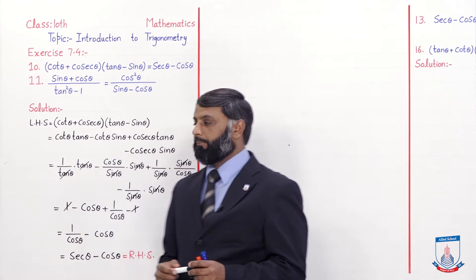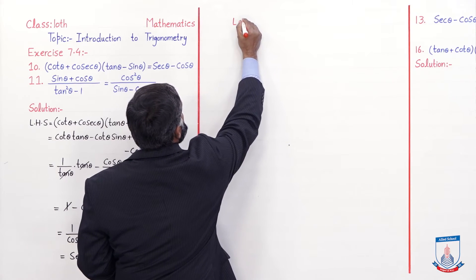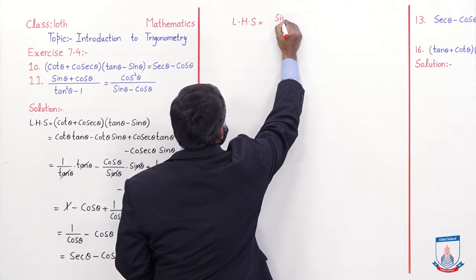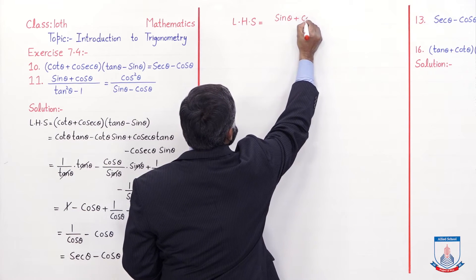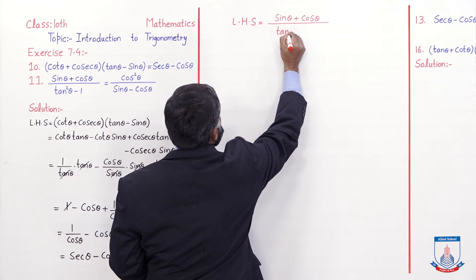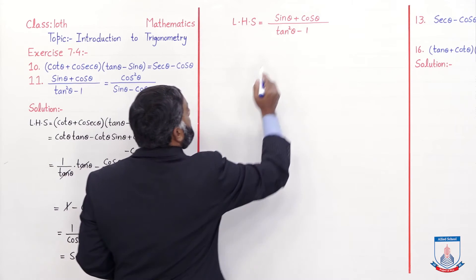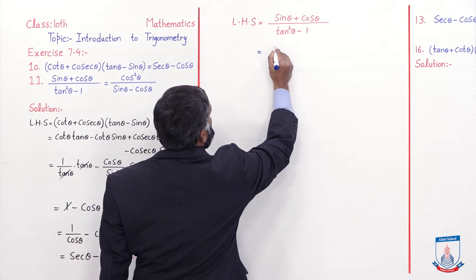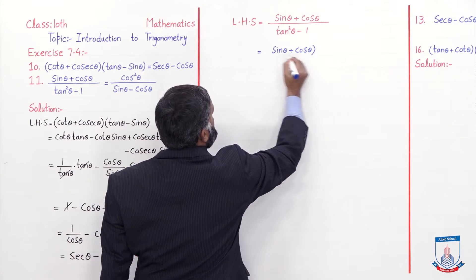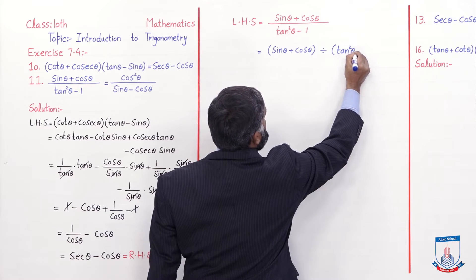Now let's solve question number 11. For question number 11 also, we take the left hand side: (sin θ + cos θ) / (tan²θ − 1).